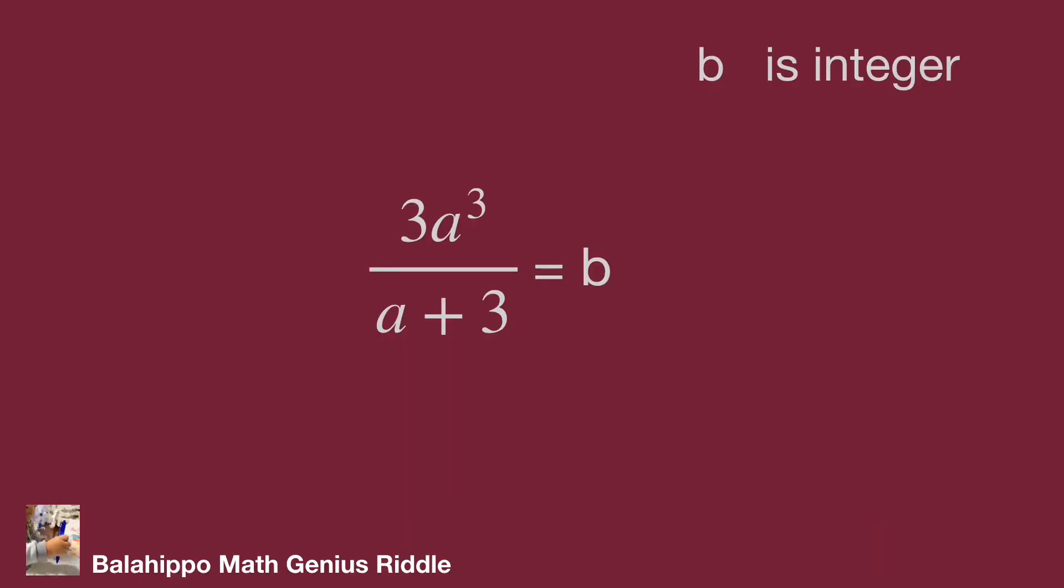The given equation 3a³ over a+3 equals b, where b is an integer. The denominator of the fraction is a+3.